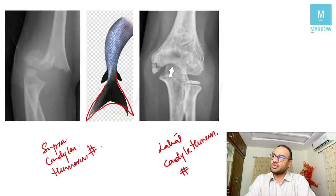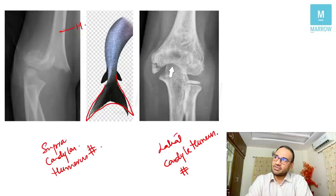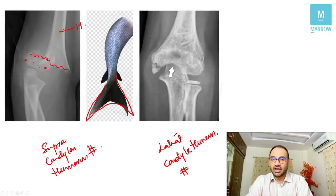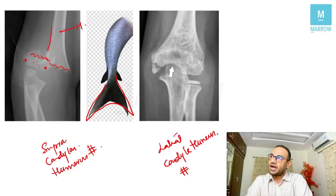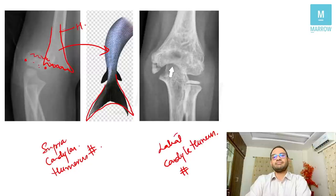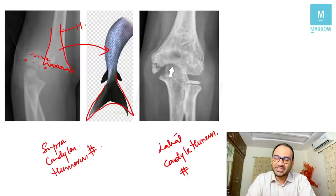In supra-condylar humerus fracture, there is a fracture just above the condyles. Because of the tilt and rotation of the distal fragment following the fracture, the proximal fragment appears to look like the tail of a fish — that is why it is called fish tail deformity occurring in supra-condylar humerus fracture.